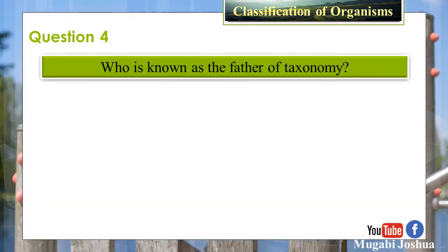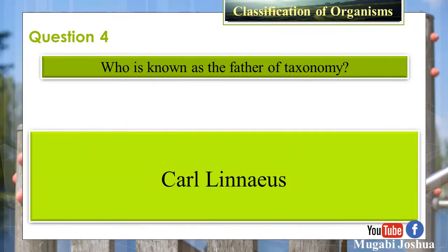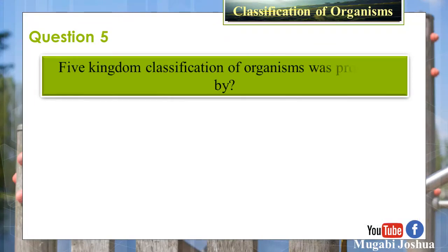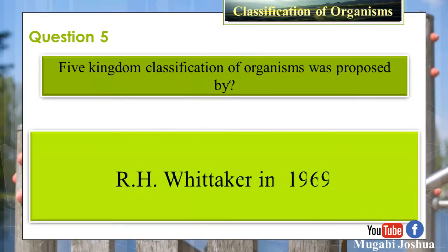Question 4: Who is known as the father of taxonomy? Answer: Carolus Linnaeus. Question 5: Five kingdom classification of organisms was proposed by R.H. Whittaker in 1969.